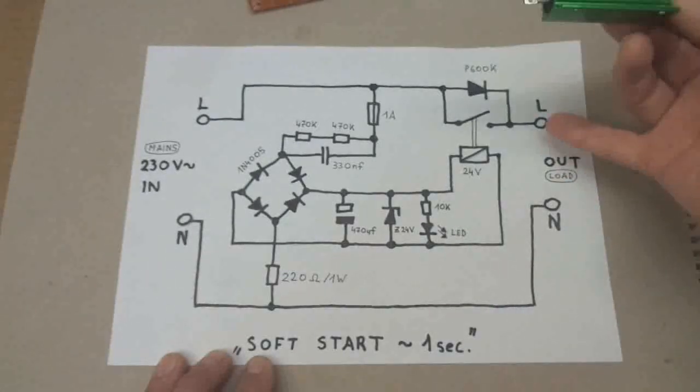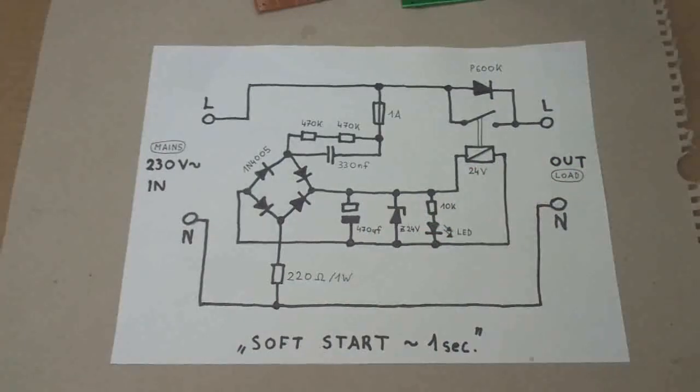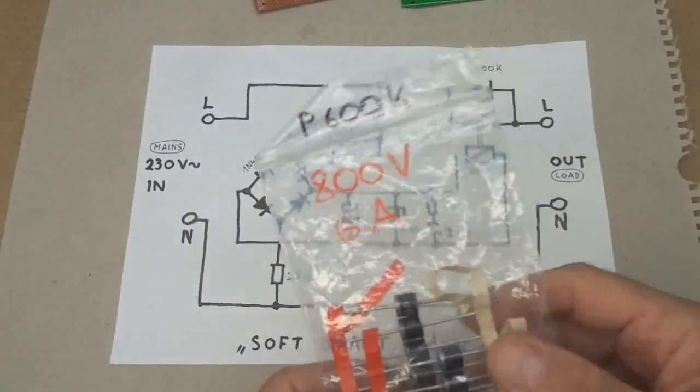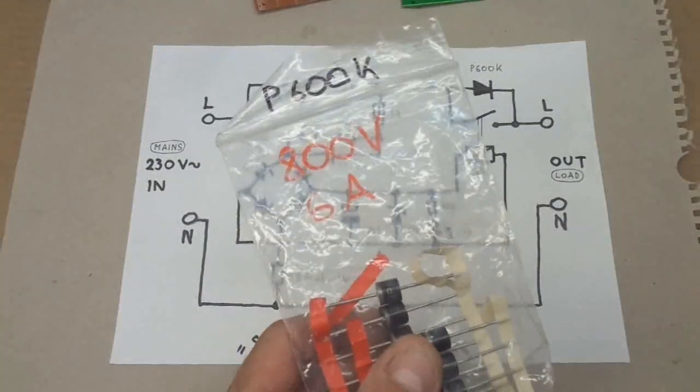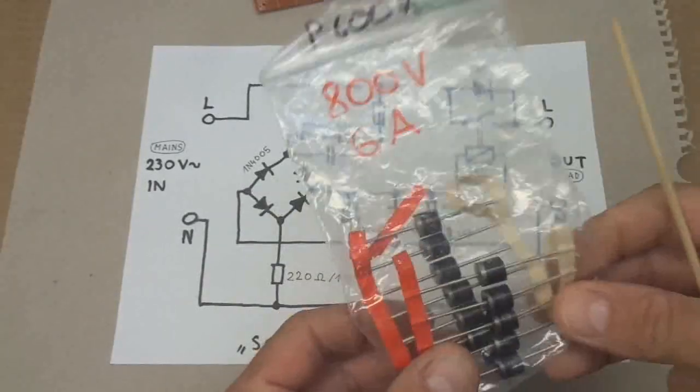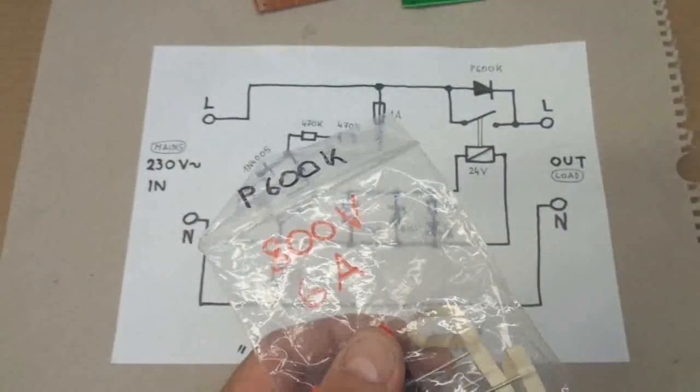The diode which I am using is a P600K, which can handle up to 800 watts and 6 amps, which is way overkill for this purpose, but that's what I had on hand.